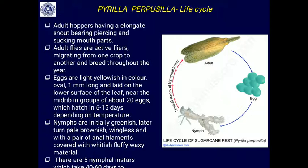The sugarcane plant hopper belongs to Hemiptera, similar to bed bugs and water bugs. The adult hopper has an elongated snout with piercing and sucking mouthparts, feeding on leaves. Adult flies are active flyers, migrating from one crop to another, and breed throughout the year.